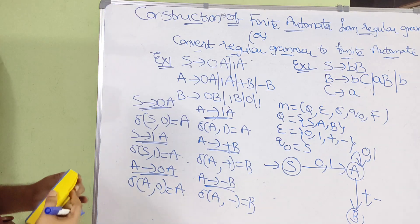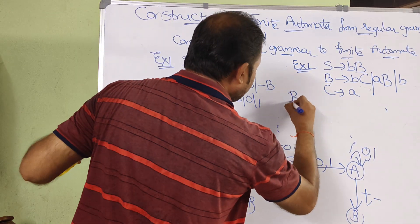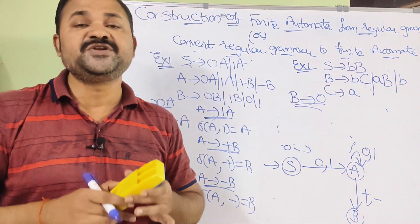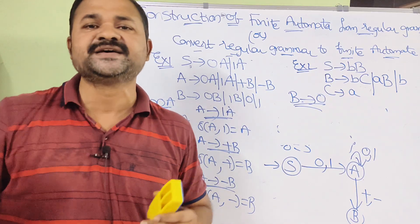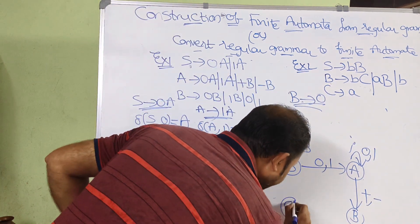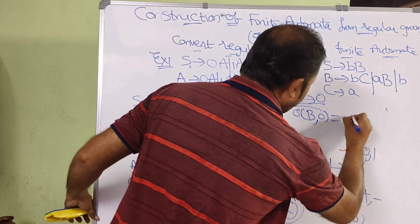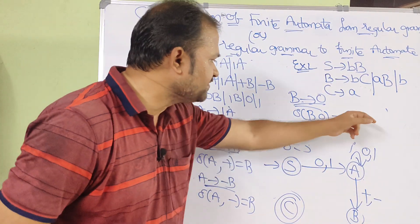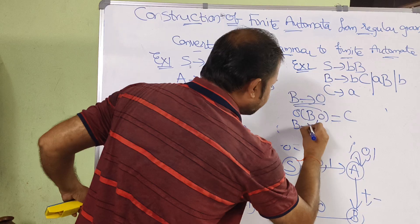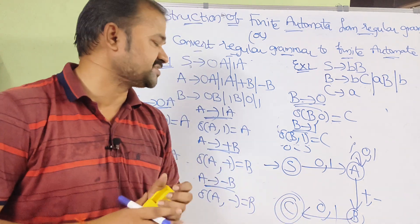Next, B → 0. Here there is no next state given, so we introduce a new state C as the final state (enclosed in a double circle). Thus δ(B, 0) = C — applying 0 on B gives final state C. Similarly, B → 1, so δ(B, 1) = C — applying 1 on B also gives final state C. In this way we draw the finite automata from the regular grammar.